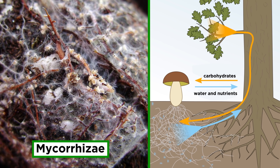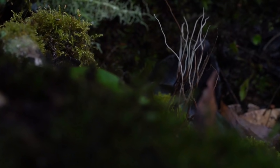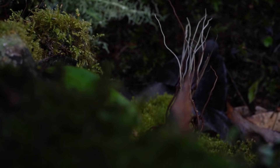Many mushrooms form a symbiotic relationship between the mycelium and plant roots called mycorrhizae, as we touched upon in the botany series, with myco meaning mushroom, and rhiza or rhizo meaning root. Mycorrhizae represent an amazing interaction that allows for the growth and life of many plants and mushrooms.